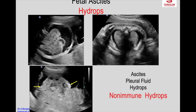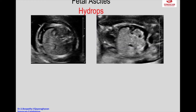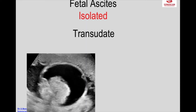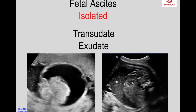Here again another finding in the placenta — a chorangioma of the placenta — which can result in either anemia or hyperdynamic circulation, cardiac failure, and result in non-immune hydrops. This fetus has ascites as seen here, where the ascitic fluid is clear; or it can be an exudate where you see ascitic fluid containing a lot of internal echoes. So that is an exudate.